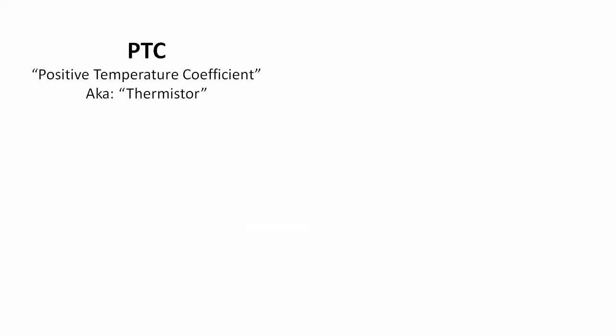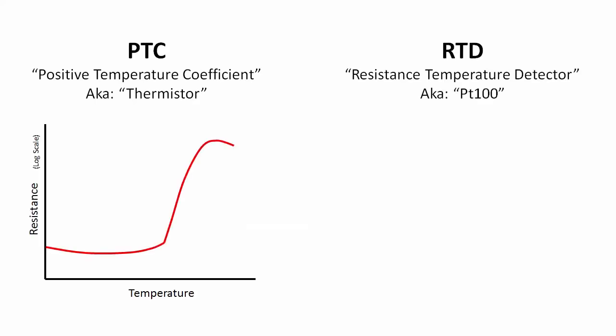The GS4 can use either PTCs or RTDs for temperature sensing. At a certain temperature, a PTC's resistance changes dramatically. When you buy one, you just pick one that changes at the temperature you want. The GS4 drive just looks for that rapid change to know when things have gone south.